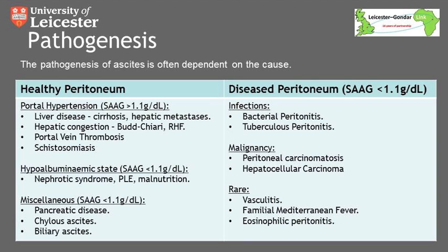The pathogenesis of ascites is often dependent on its cause, and there are a large variety of disease processes that can lead to ascites. You can classify them into those involving a healthy peritoneum — such as the various causes that produce portal hypertension or hypoalbuminemic states — or those that involve a diseased peritoneum, such as infections like bacterial peritonitis or tuberculous peritonitis, or malignancy such as advanced ovarian carcinoma or peritoneal carcinomatosis.